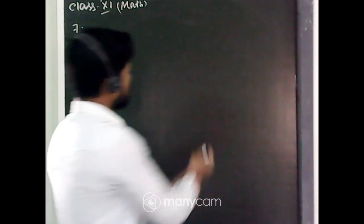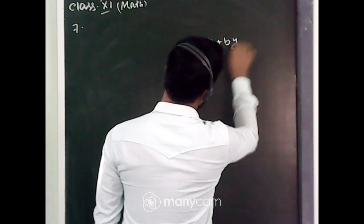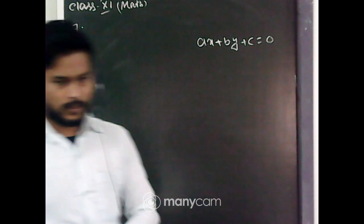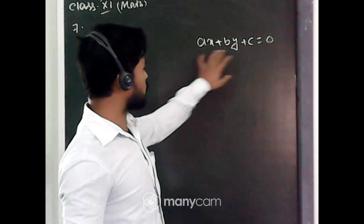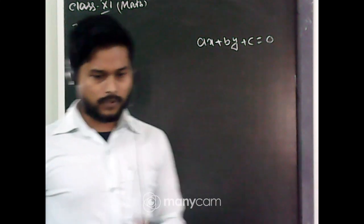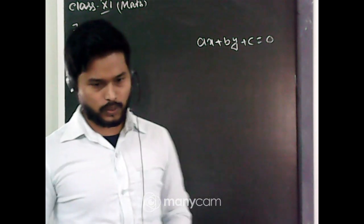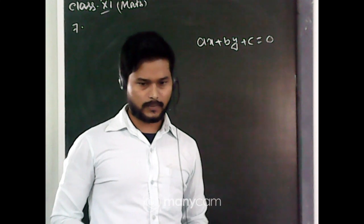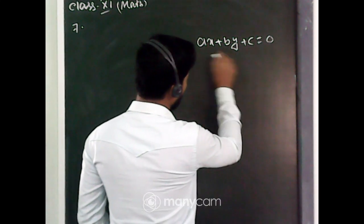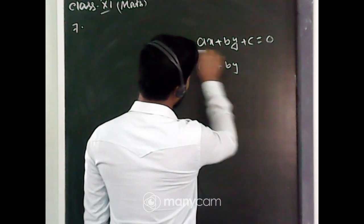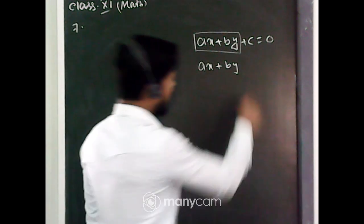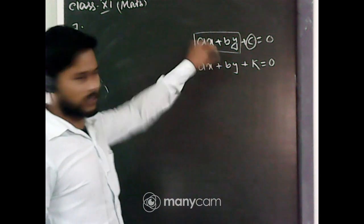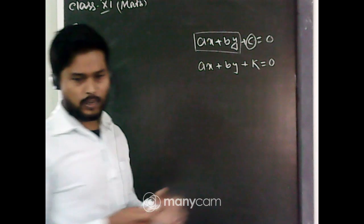I'll tell you the formula first. Suppose there is a line whose equation is ax + by + c = 0. The equation of a line parallel to this line will have the same coefficients — ax + by — but we just change the constant c to another constant k. So that gives the parallel line.